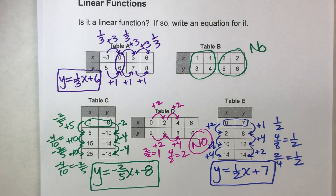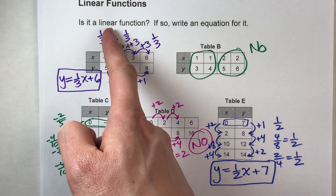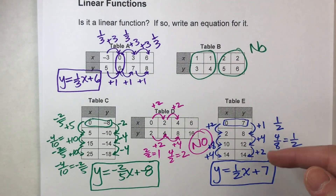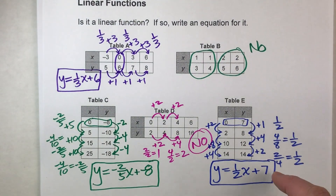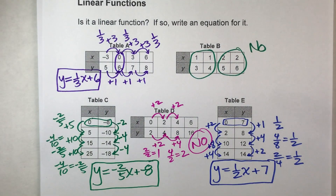Remember, in order to determine if something's a linear function, you have to check if it's a function and check if it's linear. Once you've done that, just find the slope and the y-intercept and you can write your equation. I hope this video helped you out. If it did, make sure you hit that like button and subscribe. Good luck on your math, and I will see you next time.